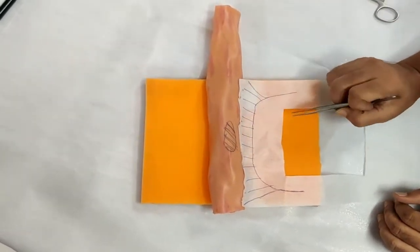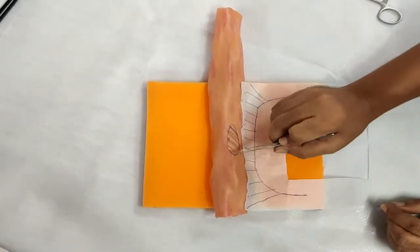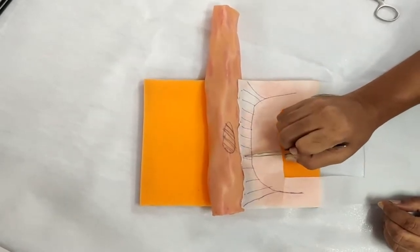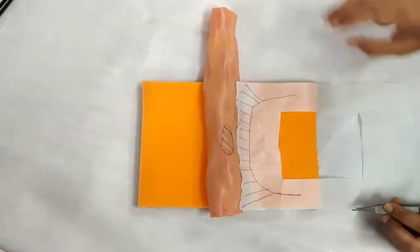Firstly, we need to identify which segment of the bowel we are going to cut. We have marked the segment on the intestine that we are going to resect.